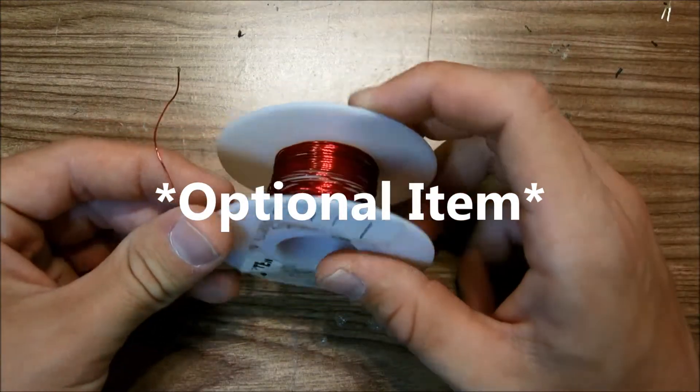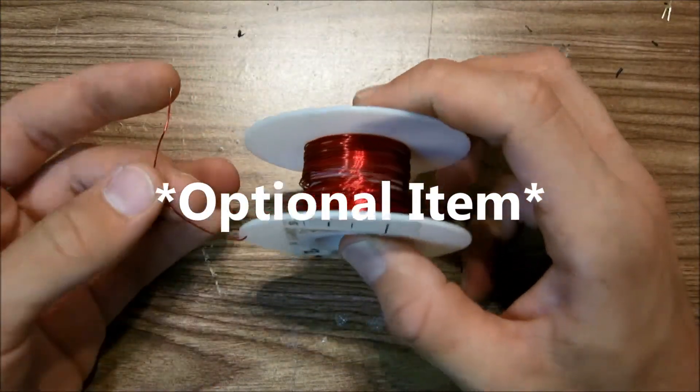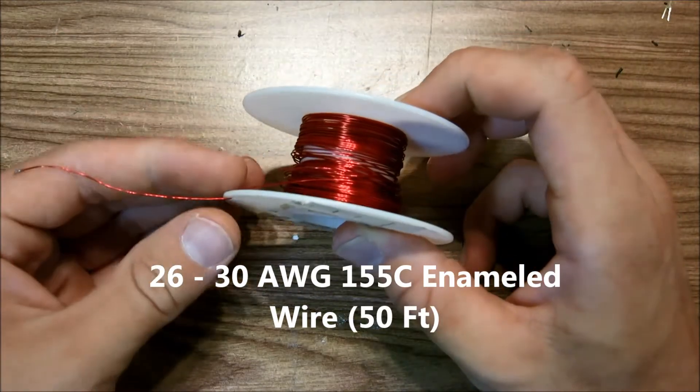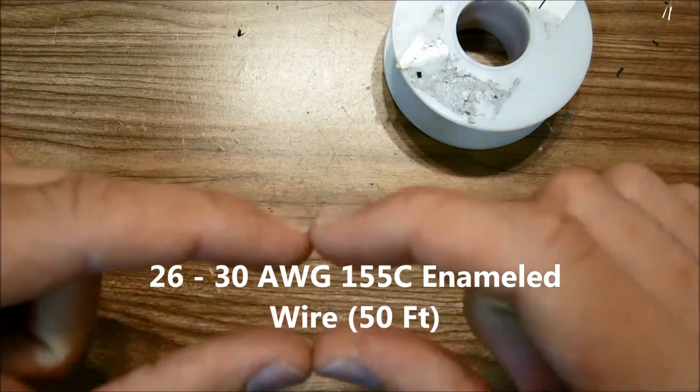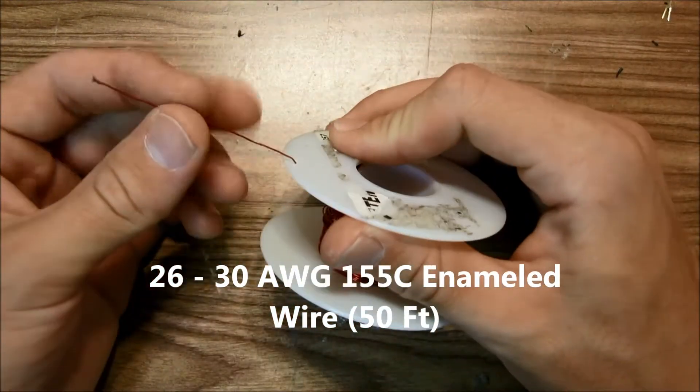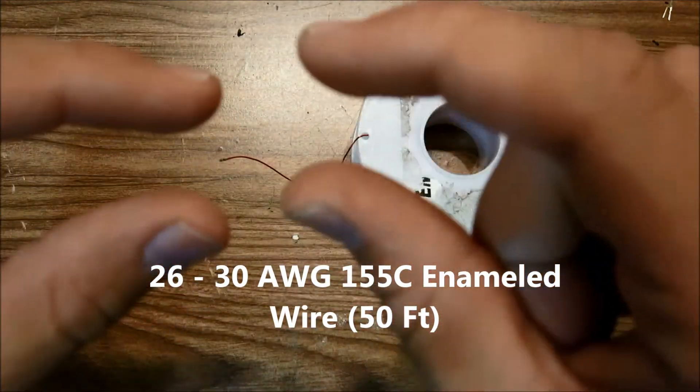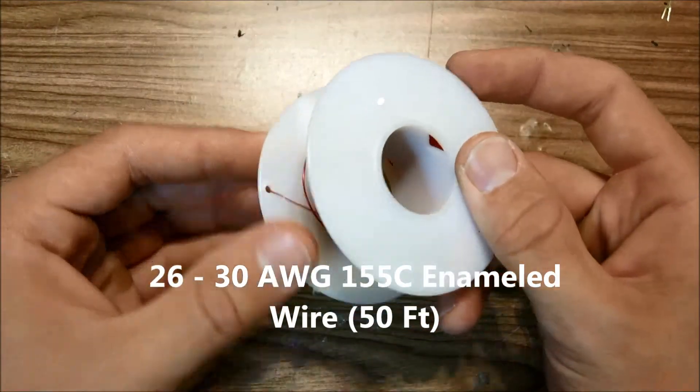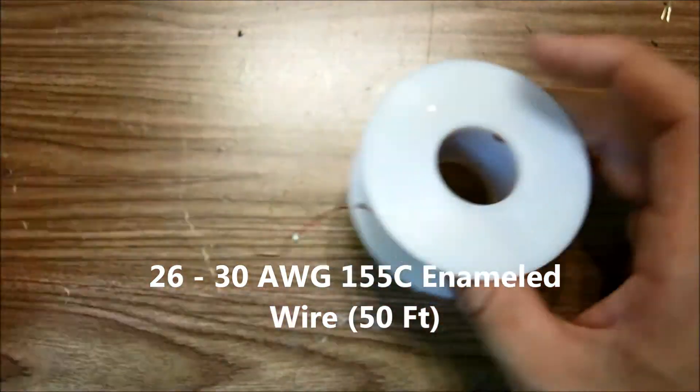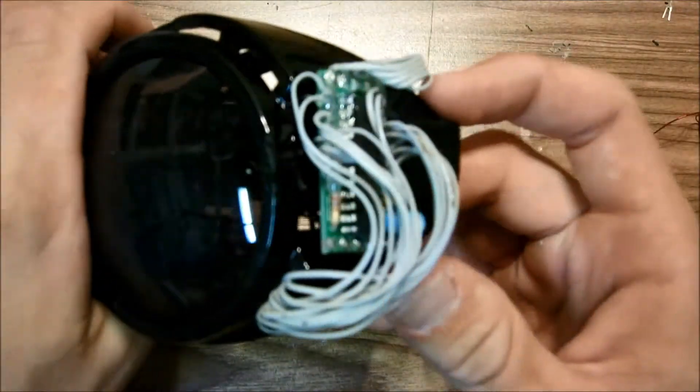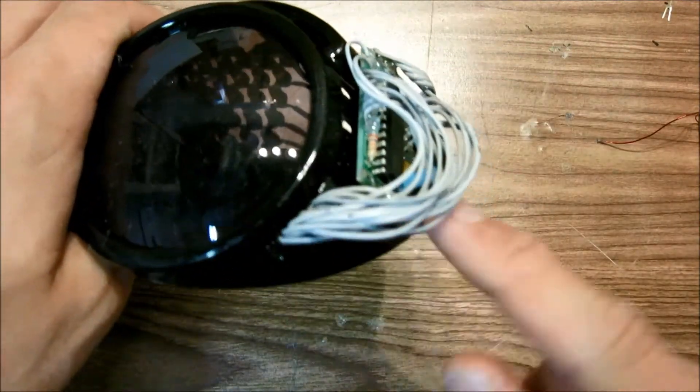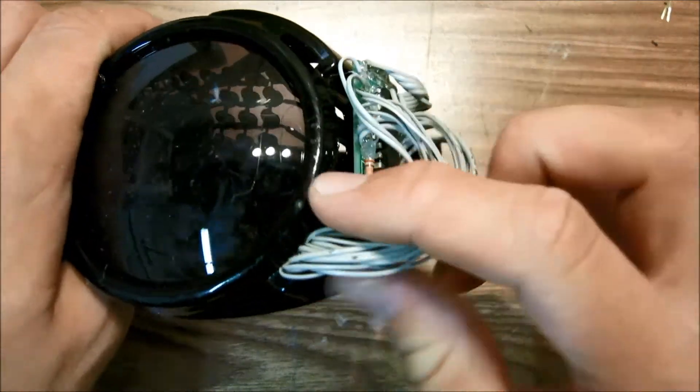An optional item you might want to get is enameled wire and this is special wire, it'll have the name of it right here. I don't remember what gauge this is but I'll have a range here showing you what type of gauge wire you can use. So you might want to get this because when you assemble the LED goggles you have these large, rather large and clunky cables.